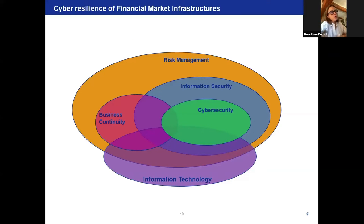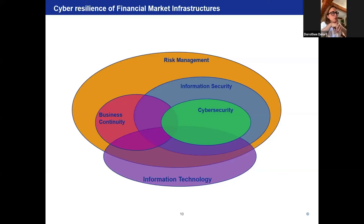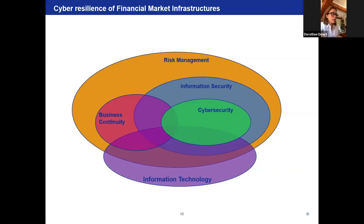I would like now to zoom in more specifically on cyber resilience. This graph is interesting because it puts into perspective the respective spaces within risk management occupied by business continuity, cyber resilience, information security, and information technology. I would like to focus on cyber resilience, which is a specific aspect of operational reliability and includes cybersecurity. The CPMI-IOSCO, the main standard-setting body for financial market infrastructure, felt it was necessary to complement the PFMI with specific guidance on cyber resilience for FMIs. The guidance is structured in chapters defining five main risk management categories: governance, identification, protection, detection, and recovery, and three general components: testing, situational awareness, learning, and evolving.